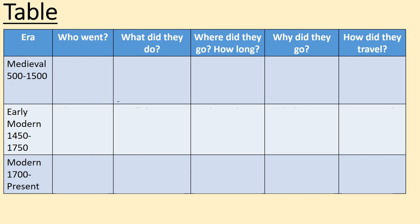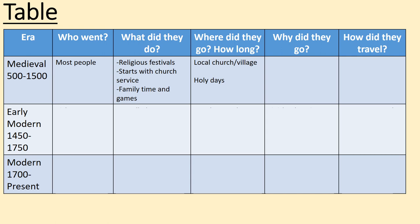Filling out our table: in the medieval era, who went on holidays? Most people did, because they were holy days. What did you do? It was a religious festival starting with a church service and family time. Where did you go? To the local church in your village. How long for? Usually a day, since it was a holy day. Why? Religion was everything to people at this time, and in some cases it was actually the law to attend. How did people travel? They would walk, or if wealthy, ride into town on horseback to show their status.